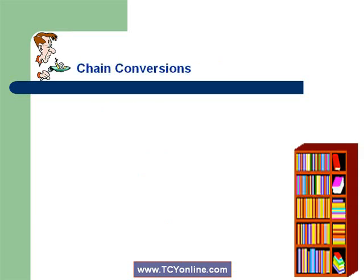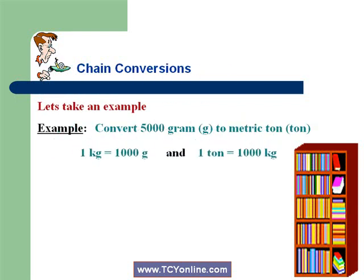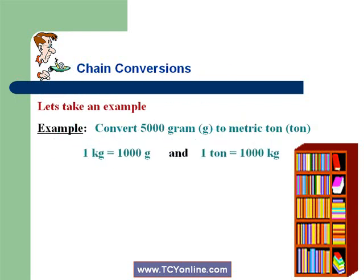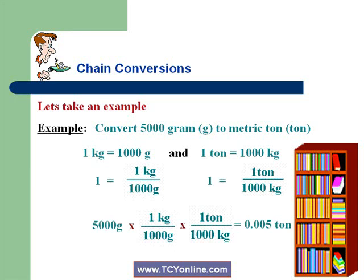Now let's learn about chain conversions. For this, let's take an example. We need to convert 5000 grams to metric tons. We are aware that 1 kilogram equals 1000 grams, while 1 ton equals 1000 kilograms. First, construct a fraction equal to 1 by writing the equation with the desired unit on top and the given unit on bottom. So for 1 kg equals 1000 grams, we get 1 equals 1 kg over 1000 grams.